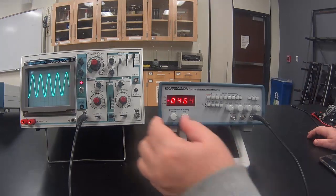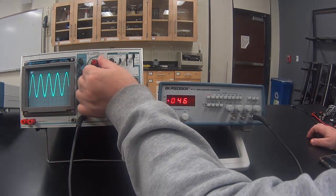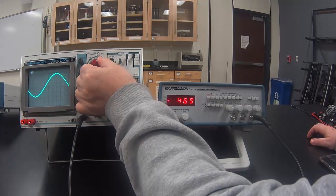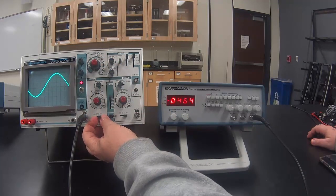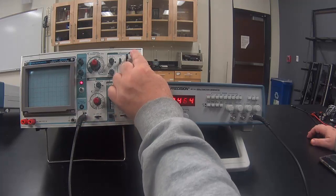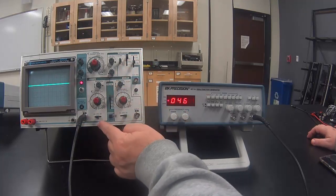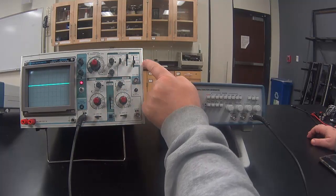We want to adjust the time sweep knob until we have basically one wave displayed. We might want to do a ground level adjustment to make sure that the ground is on some convenient line for measuring from.